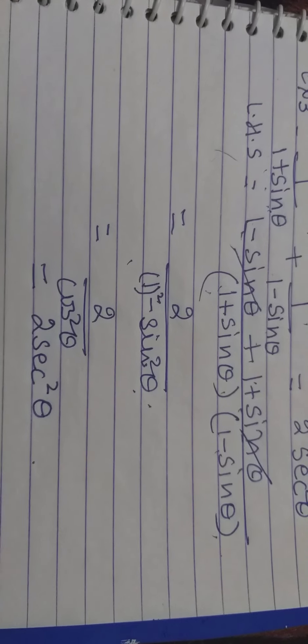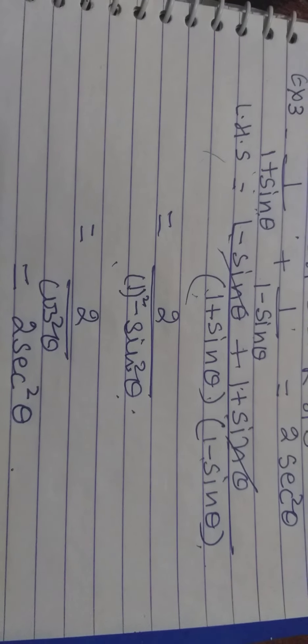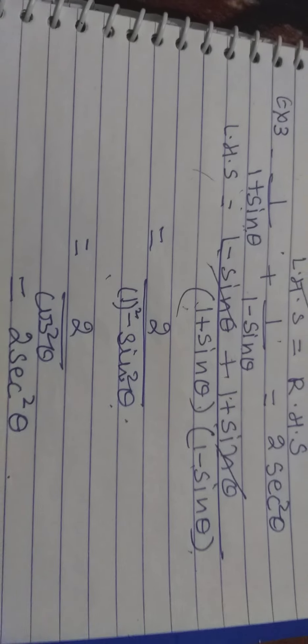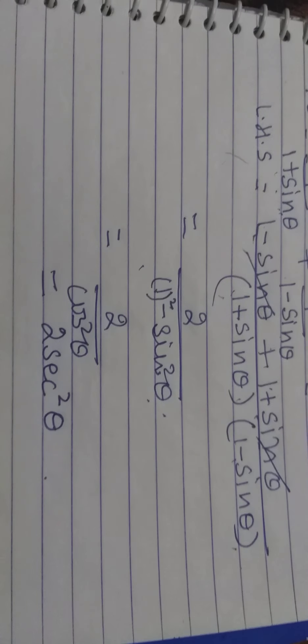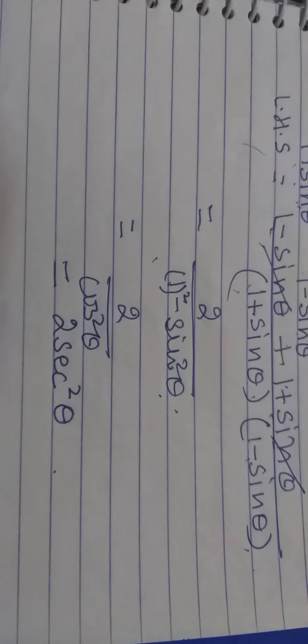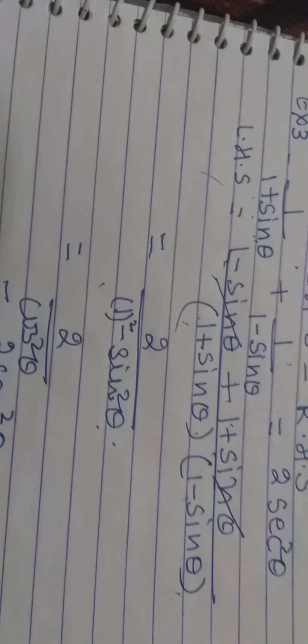So this comes to 2 upon cos square theta, which is 2 sec square theta. In all these trigonometric identity problems there are proofs, and you only have to use those three identities which have been told to you.